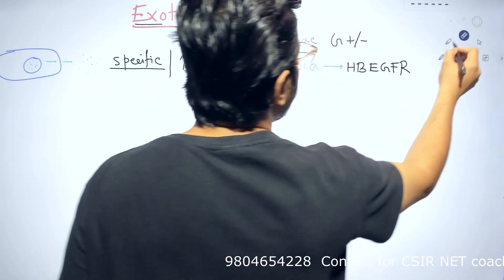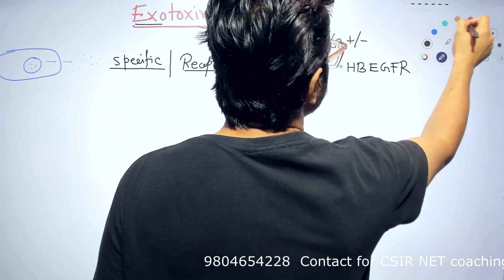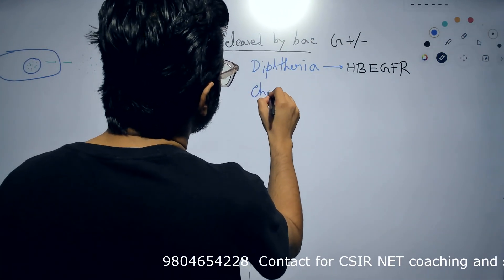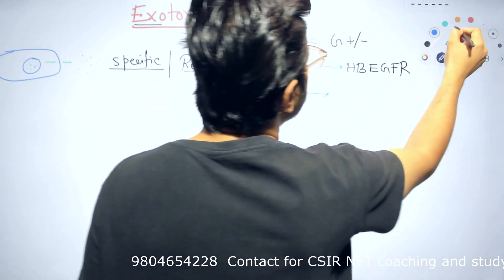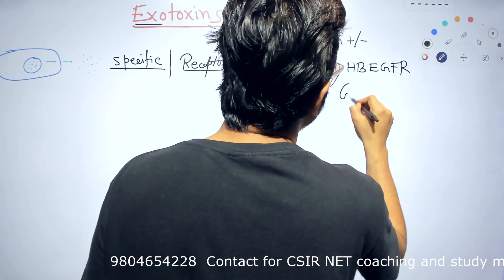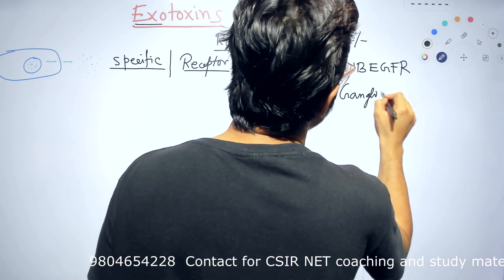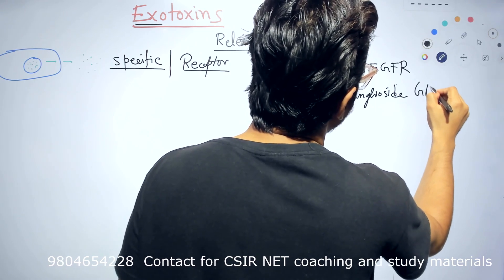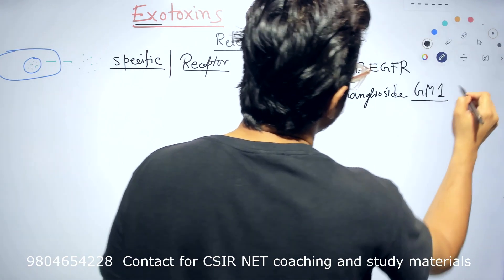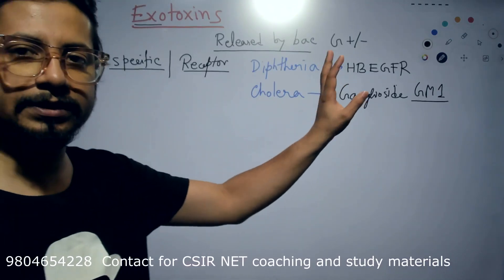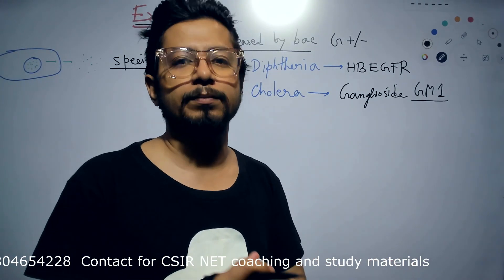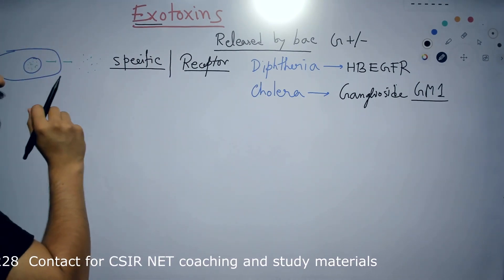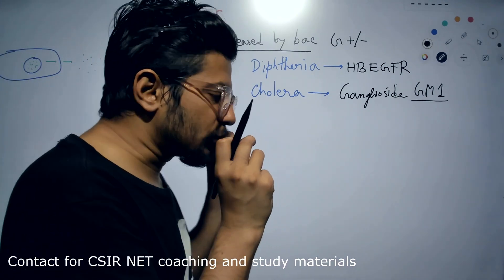Second example is cholera toxin. Cholera toxin always binds to ganglioside GM1 receptor. Ganglioside receptor is the receptor where the cholera toxin binds. So these are specific bindings and these toxins,